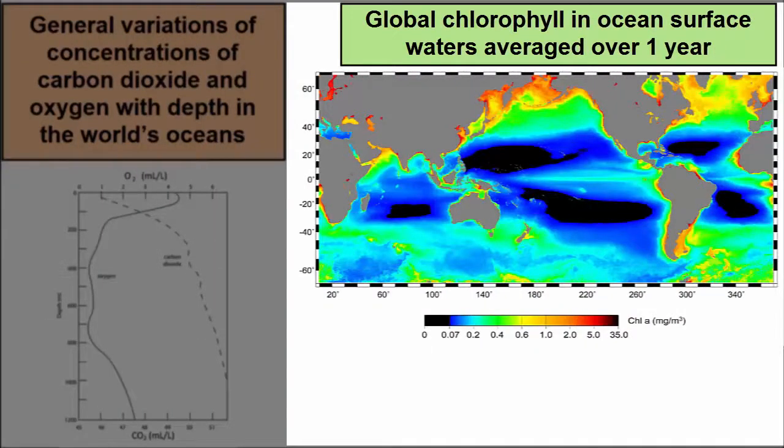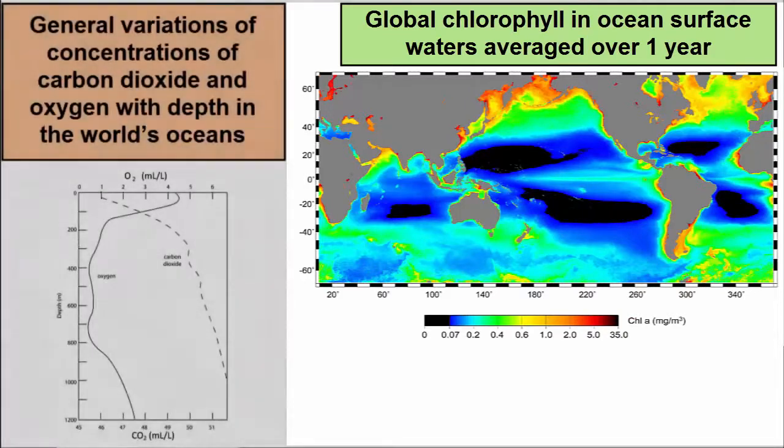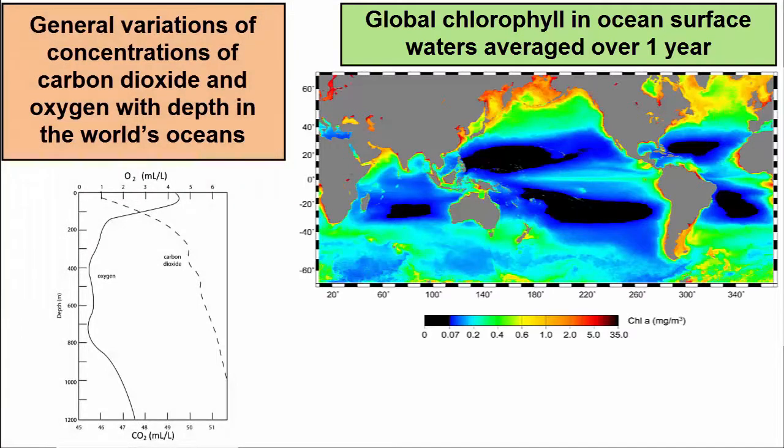This map is showing global chlorophyll averaged over one year's time on the planet. Plenty of questions still, but that's how we start.